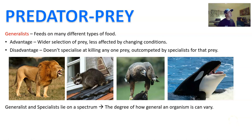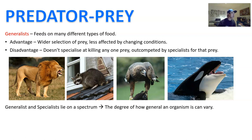On the other hand, generalists feed on many different types of prey and food. The advantage is a wider selection, meaning when a certain species of prey dies out, you can switch and hunt something else. However, the disadvantage is that you're not particularly good at killing any one type of prey, so when you match up against a specialist for that prey, you'll be out-competed. But you have other options, so that's okay.